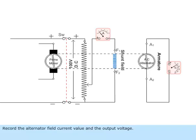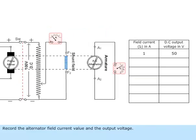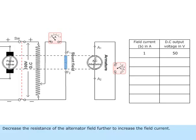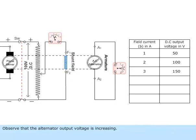Record the alternator field current value and the output voltage. Decrease the resistance of the alternator field further to increase the field current. Observe that the alternator output voltage is increasing.